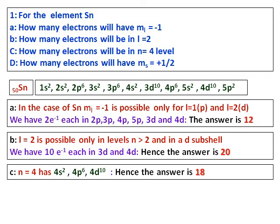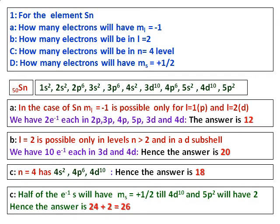For ms = +1/2: from 1s2 through 4d10, there are 48 electrons total, so 24 have ms = +1/2. The remaining 5p2 has 2 electrons that, by Hund's rule, occupy different orbitals and both have ms = +1/2. Therefore, the total number of electrons with ms = +1/2 is 24 + 2 = 26.